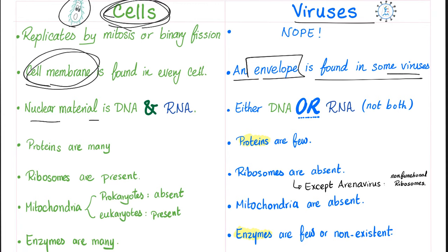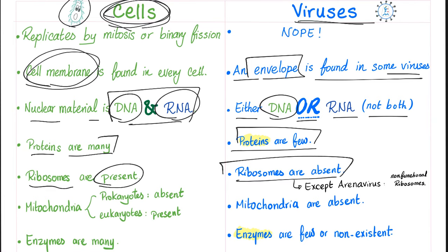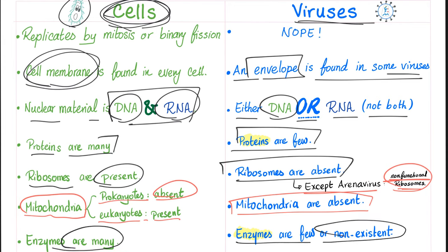In your cell you have DNA and RNA at the same moment, but viruses have either DNA or RNA — not both, never ever. Cells have many proteins; viruses have few. In cells ribosomes are present; in viruses ribosomes are absent, with one tiny exception: the arenavirus — and even those ribosomes are non-functional. Mitochondria are present in eukaryotic cells but absent from viruses. Cells have lots of enzymes, but in viruses enzymes are few or non-existent. This makes sense because proteins are few, and since enzymes are proteins, enzymes are also few.